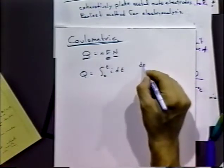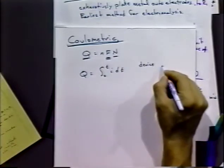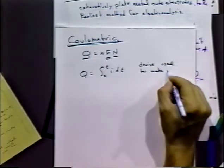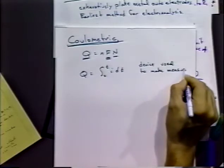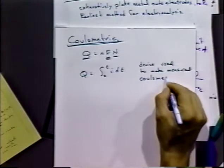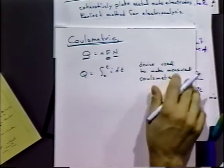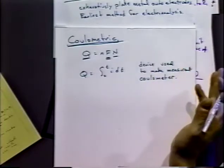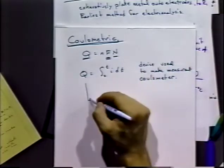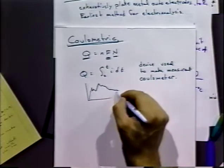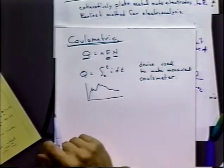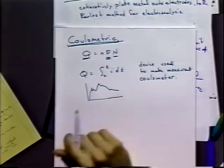A device used to make that measurement is a coulometer, and you can do this manually. You could have a trace recorded on chart paper, and you can use various methods to take that current trace, integrate it, and get the charge.